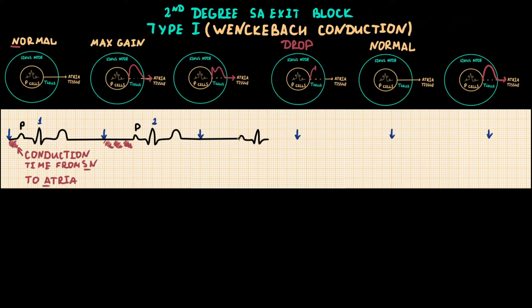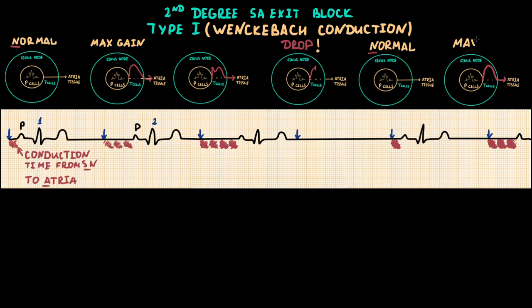We see roughly triple increase of conduction time in the second complex compared to the first one. Further complexes show a smaller gain of sinoatrial conduction time compared to the second one. After this, the sinus impulse is blocked, causing a PAUSE on ECG. After the PAUSE, conduction properties of T-cells are restored, normal conduction time returns in the first complex after the PAUSE, and the cycle repeats with maximal gain in the second impulse of the new cycle.